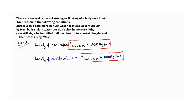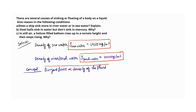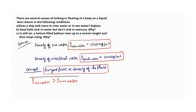Now we use this concept: buoyant force is directly proportional to density of the fluid. We use this concept in discussing this question. Here we find density of sea water is greater than density of river water.